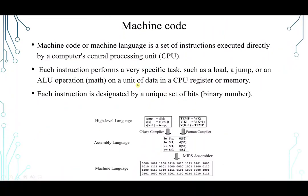So the machine code or machine language is a set of instructions executed directly by a computer central processing unit, CPU. Each instruction performs a very specific task, such as like load, jump, or ALU operations, arithmetic logical unit operations, like math, on a unit of data in a CPU register or memory.